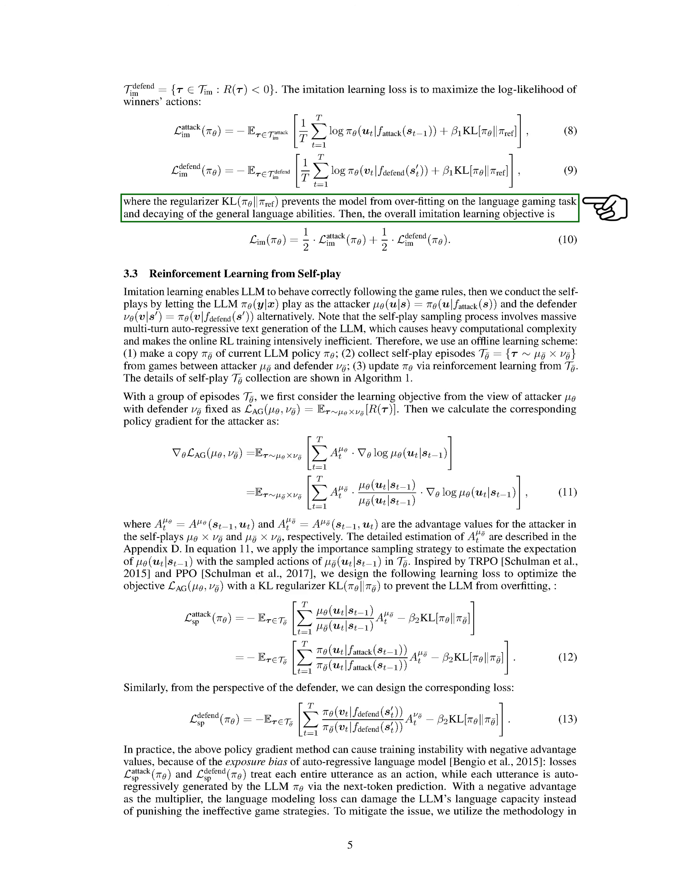The LLM takes turns playing as the attacker and the defender. Self-play involves generating a lot of text, which can be computationally intensive. To address this, we use an offline learning approach where we copy the current LLM policy, collect self-play examples, and update the policy through reinforcement learning.